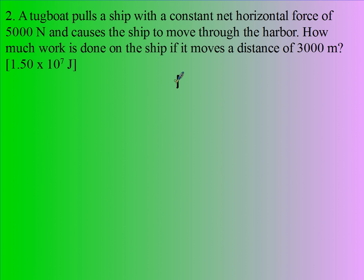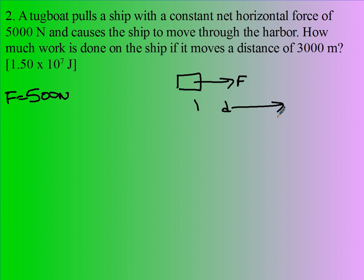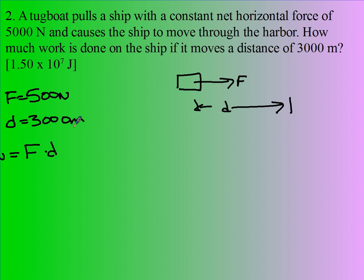Now suppose I have a tugboat being pulled with a constant force of 5,000 newtons. It causes the ship to move toward the harbor. How much work is done if it moves a distance of 3,000 meters? Clearly F and D are in the same direction, so F times D equals the work done on the ship.